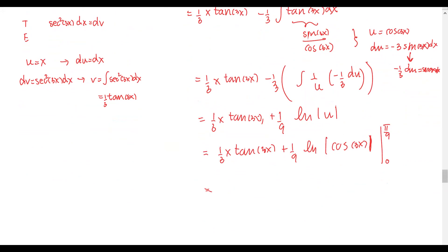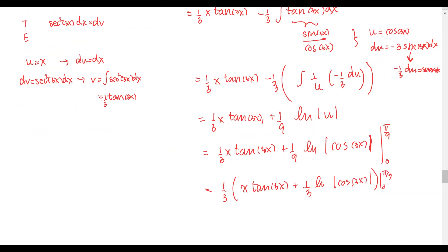Using the common factor of one third, we get x times tangent of 3x plus one third times the natural log of the absolute value of cosine of 3x, evaluated from 0 to pi over 9.